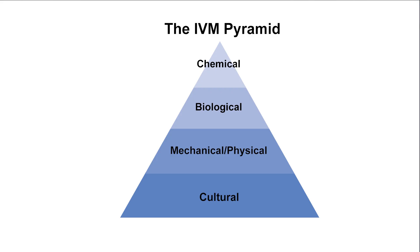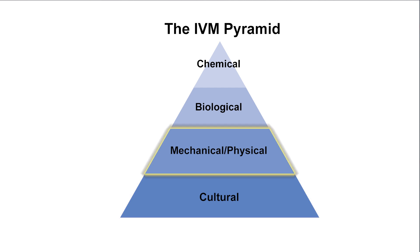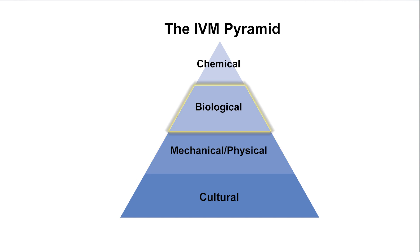The final and most important component of a successful IVM program is the use of multiple control tactics. Integrating multiple control tactics together is what puts the 'integrated' in IVM. There are four main types of tactics: cultural control, mechanical or physical control, biological control, and chemical control.